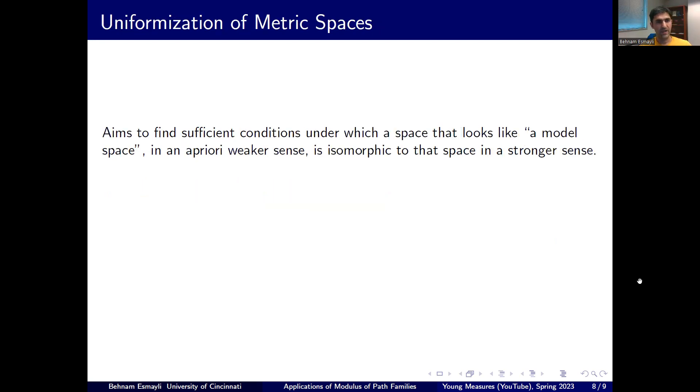We'll come back to this also again later. Another place where I've seen modulus appear is the uniformization theory. So uniformization is when you have a metric space that looks like a simpler model space. And then you ask whether your metric space is equivalent to that space in a much stronger sense. For example, let's say you start with a metric space that is homeomorphic to a sphere. Spheres are quite well understood and simple objects. So you have an abstract metric space, which is homeomorphic to a sphere. What more conditions do you need on this metric space to guarantee that there is a quasi-conformal homeomorphism onto the sphere, or even better, a quasi-symmetric homeomorphism on the sphere?